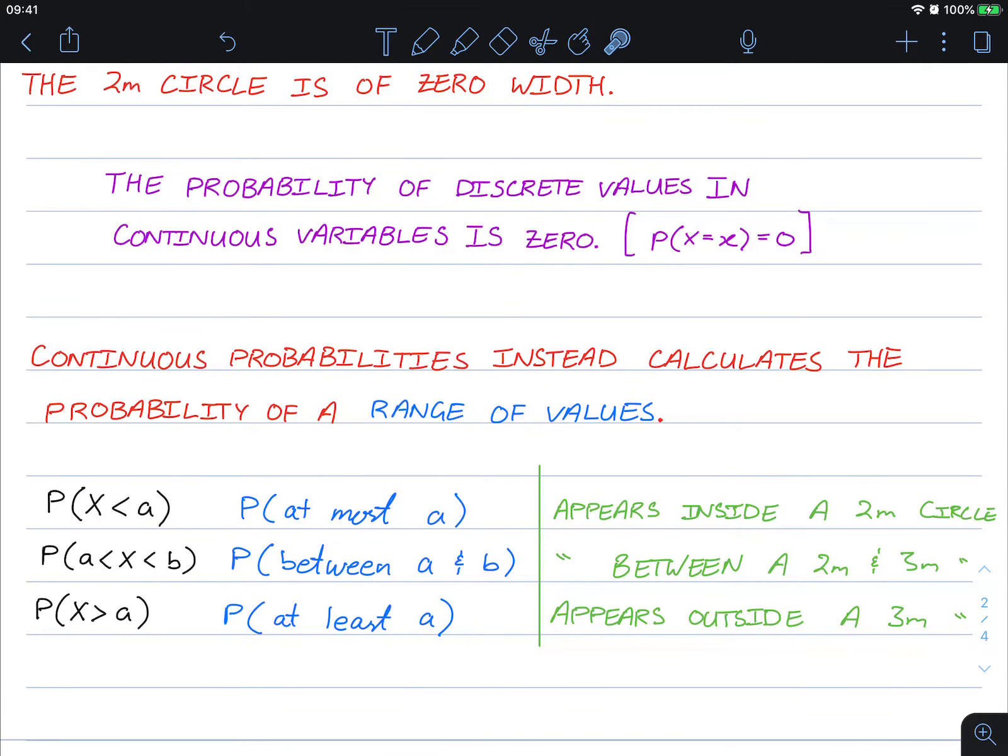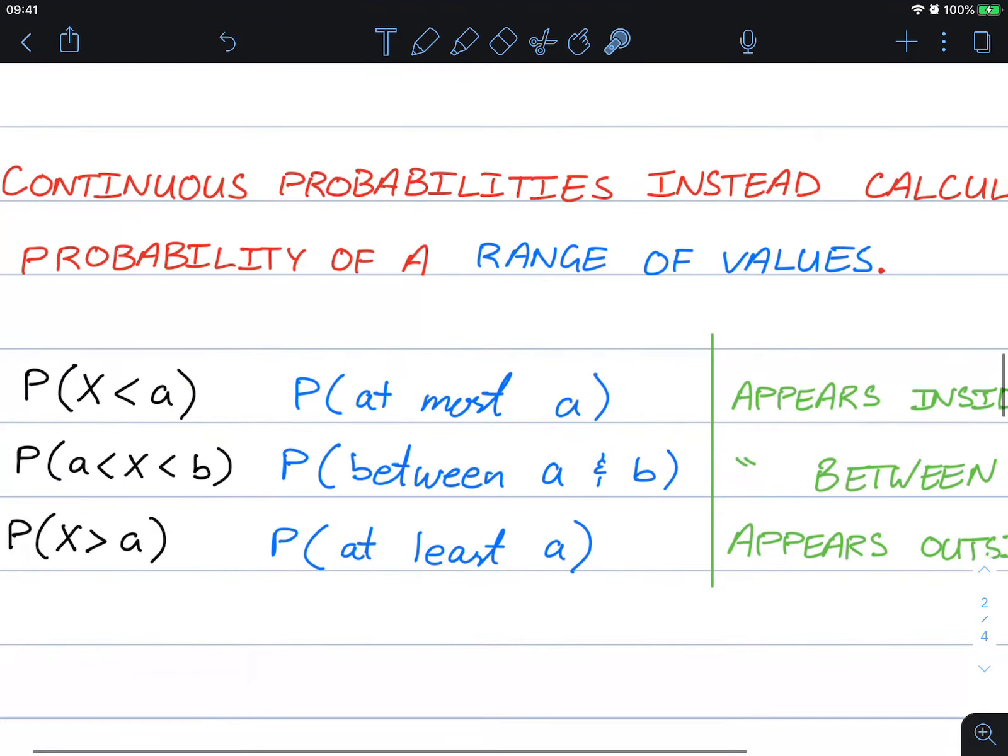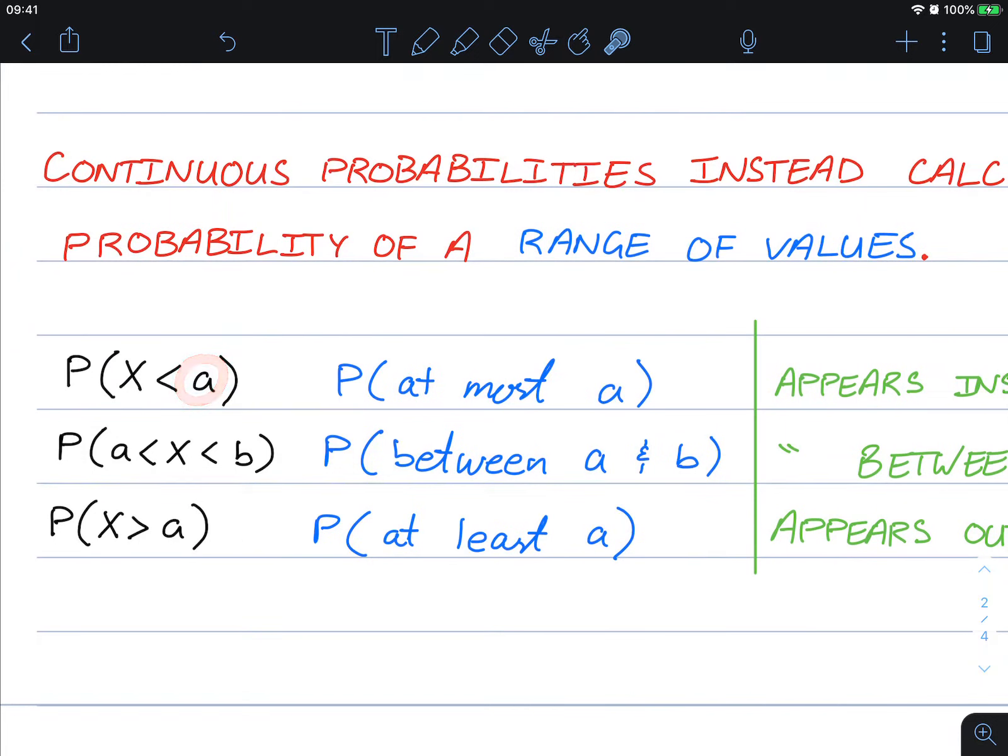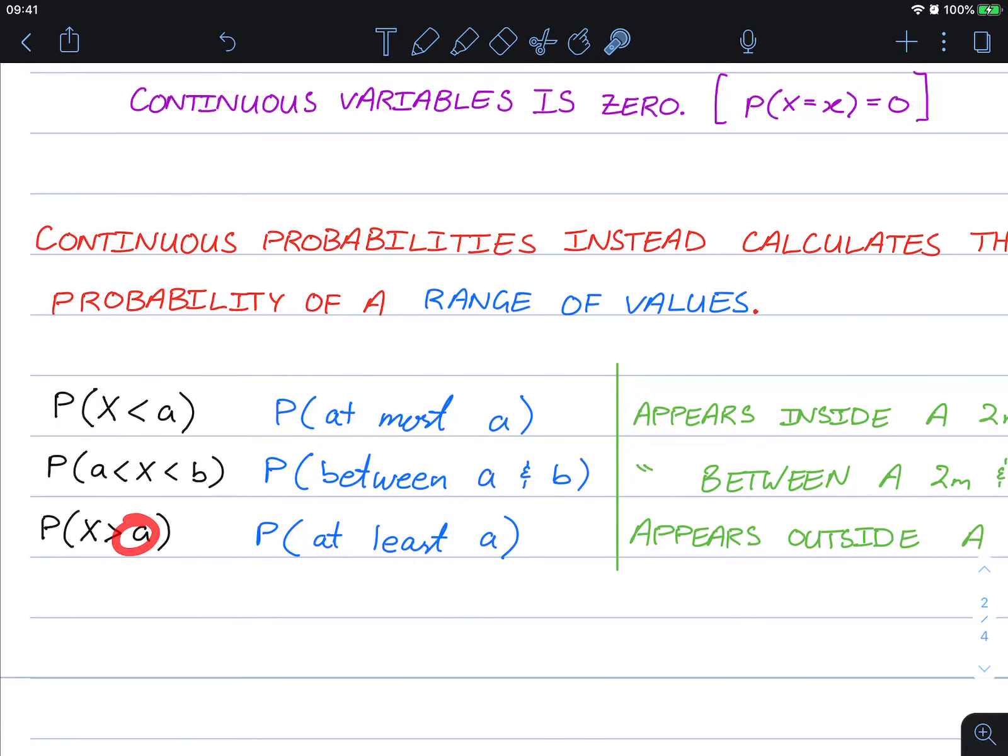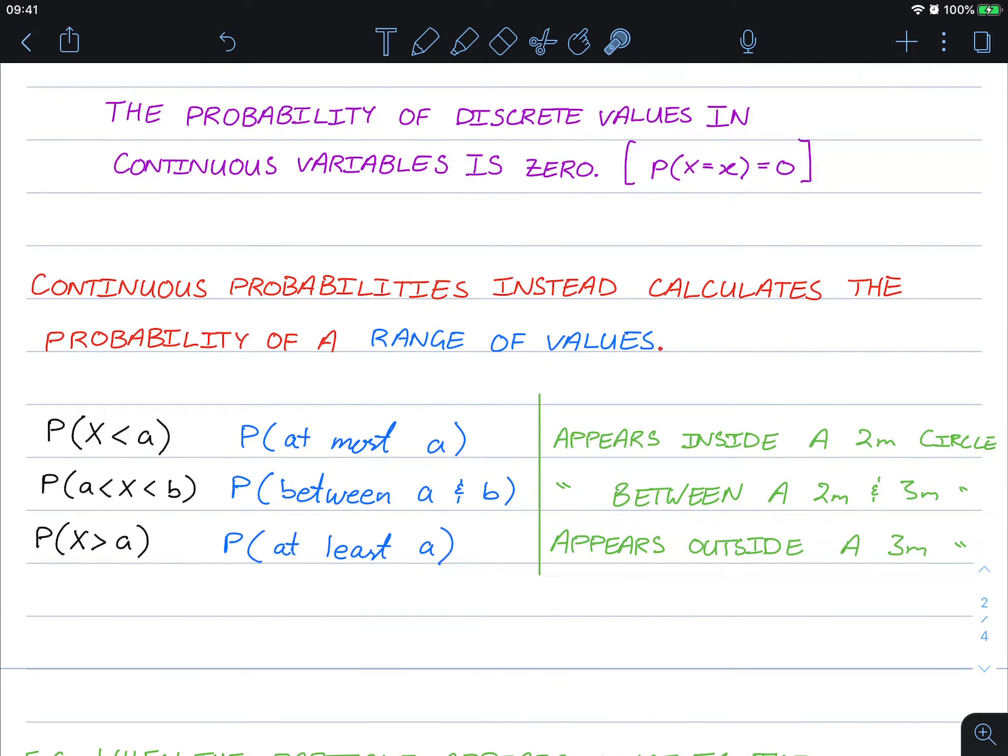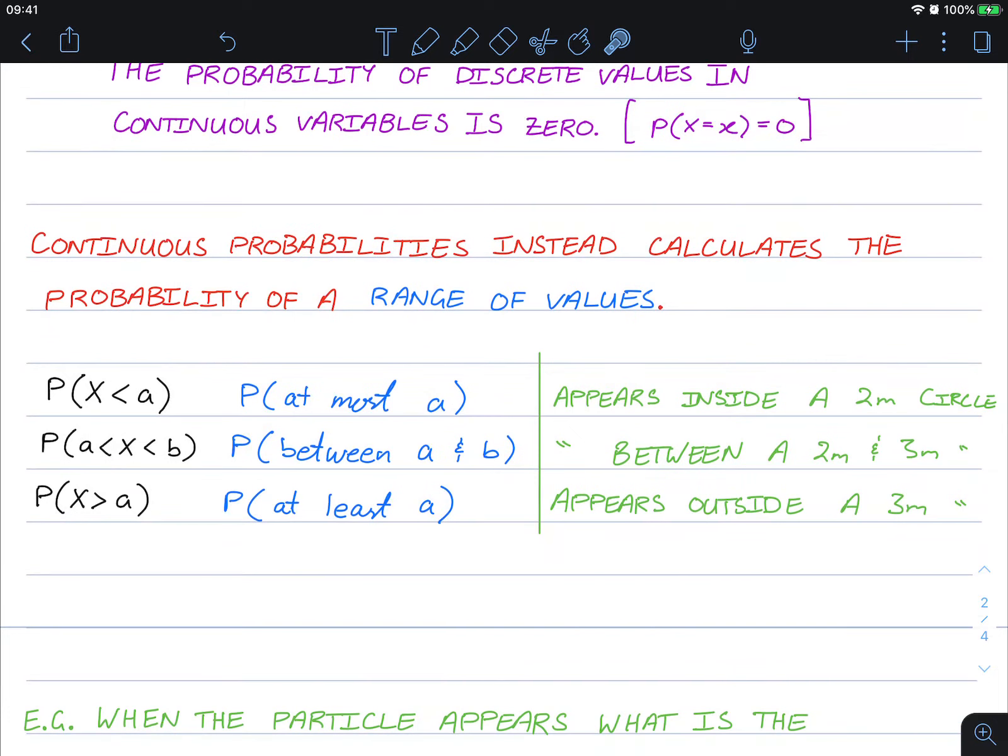Continuous probabilities instead calculate the probabilities of a range of values. Either we take all the numbers less than a particular target, so the probability at most a. We can calculate the probability between two values, so x is less than b but greater than a. Or from a to the maximum number allowed, so from at least a.